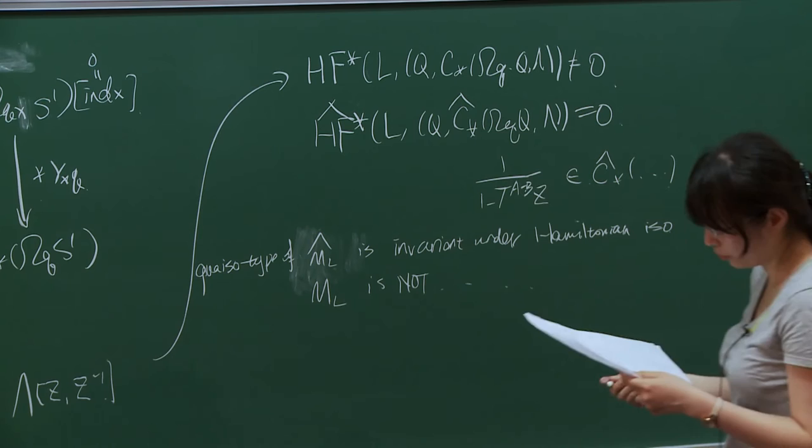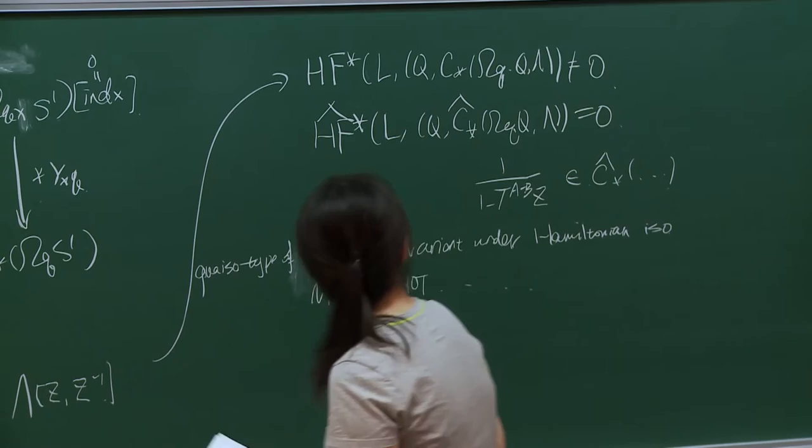Since I assumed A is greater than B, I could Hamiltonian deform this Lagrangian L to one that is Hamiltonian isotopic to it — a nearby S1 that doesn't have to intersect this S1. So you ask: is quasi-isomorphism type of this module invariant under Hamiltonian isotopy? The answer is also stated in his lecture: if you look at this hat version, it is invariant under Hamiltonian isotopy. And you can see from the other one — obviously HF is zero because they don't intersect — so the non-hat version is not invariant.